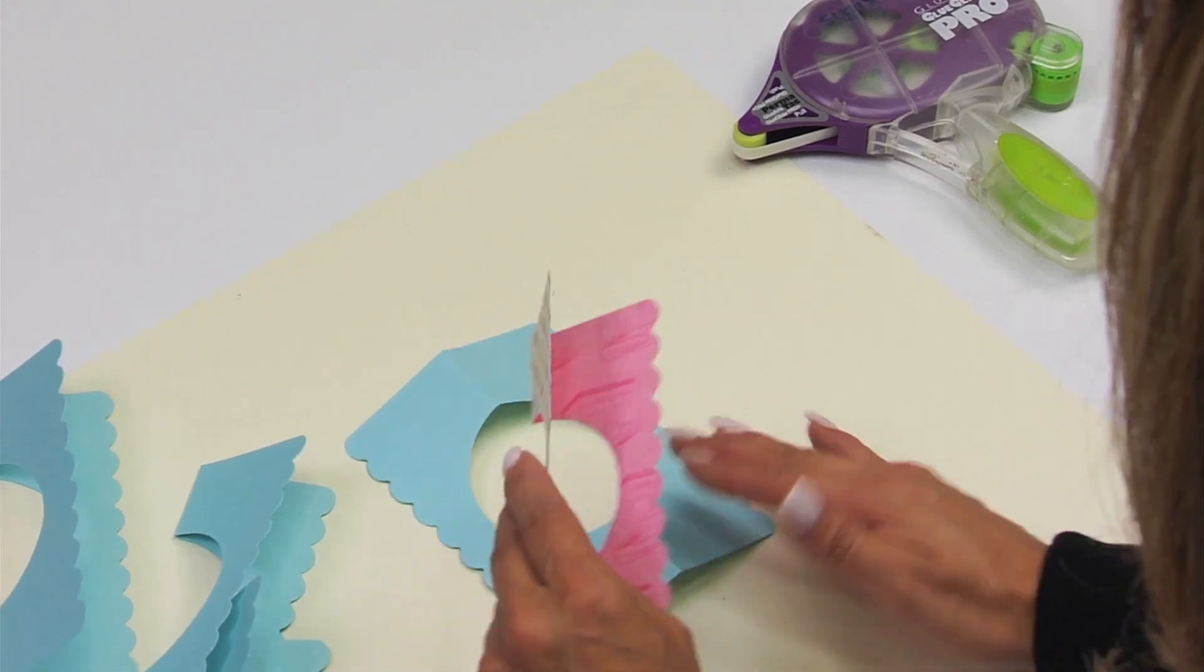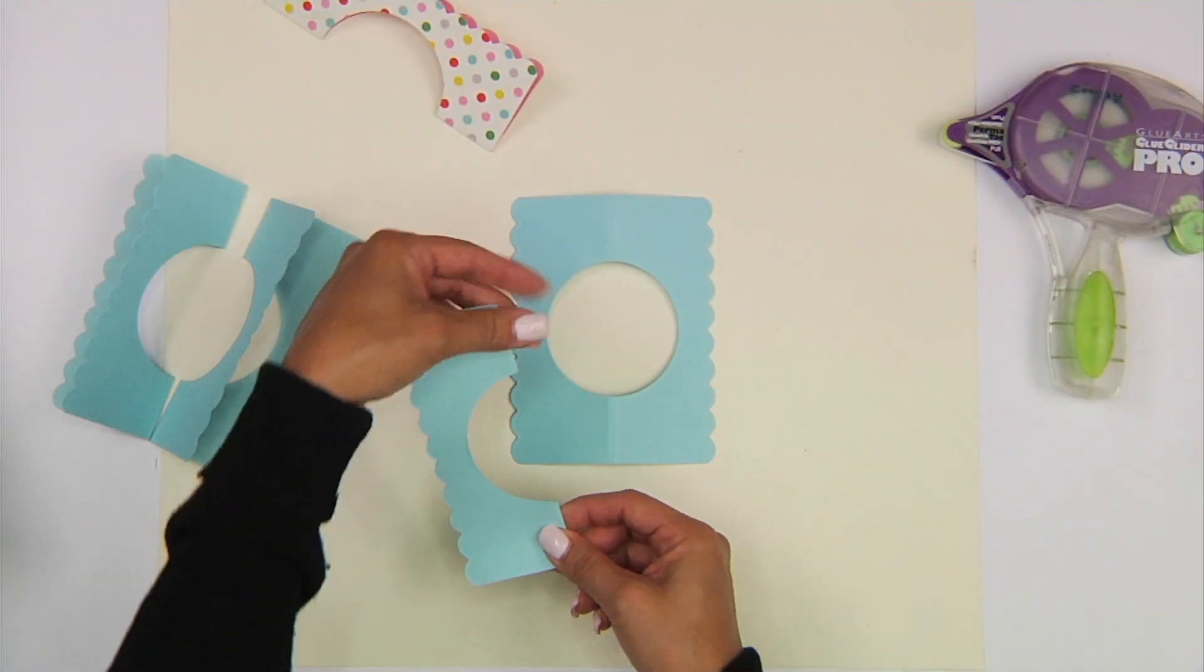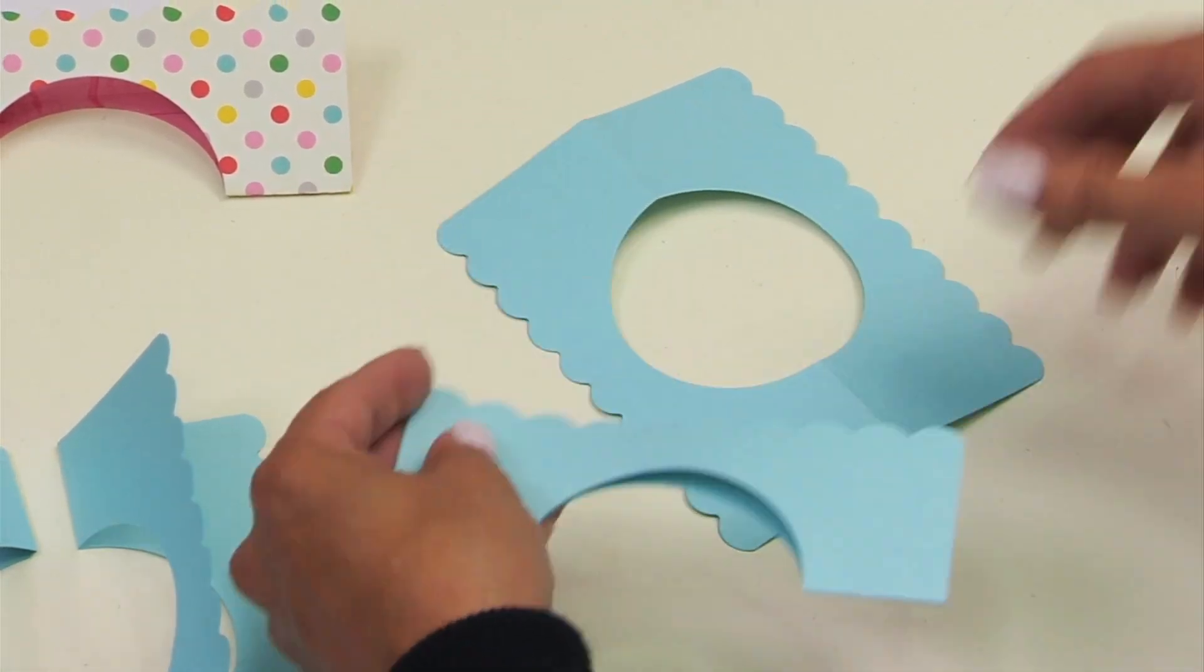We'll begin assembling our card. One will be our base. We'll fold this one in half here, and we're going to adhere it with some adhesive to the left-hand side of the card.